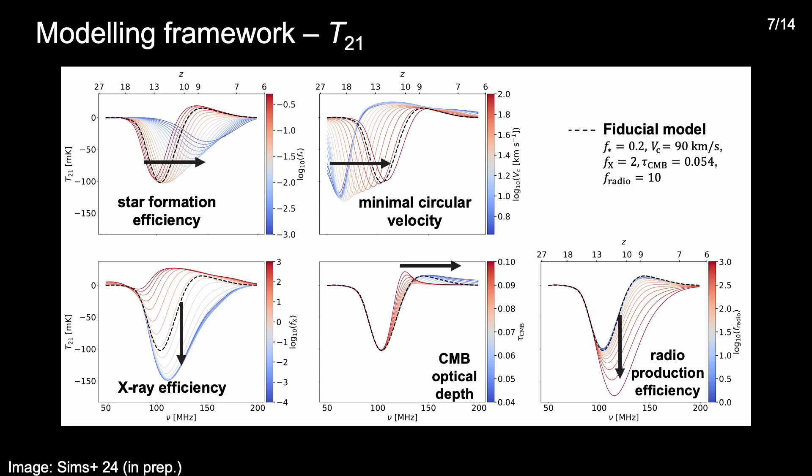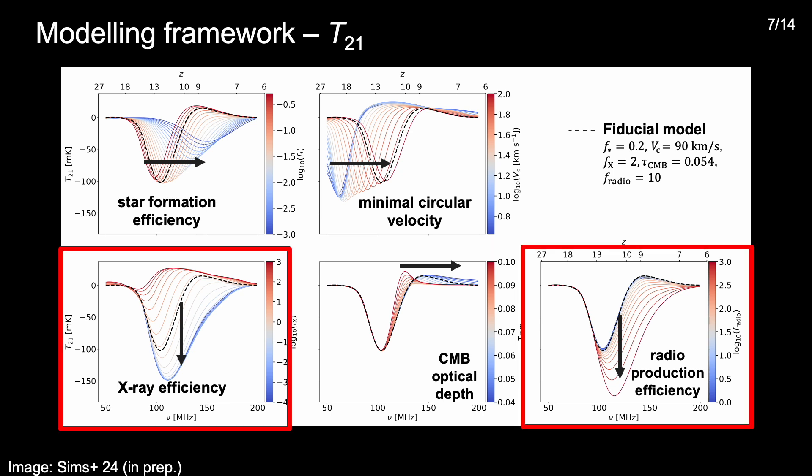In contrast, changes in the galactic X-ray or radio efficiency scale the amplitude of the signal, with low X-ray efficiencies translating to low levels of heating of the IGM and a low 21cm spin temperature, and high radio production efficiencies translating to a high radio background temperature, and the combination of the two resulting in the greatest contrast and producing the largest 21cm signals in absorption. So a global 21cm signal upper limit will tend to constrain the posterior distribution of the X-ray and radio production efficiency, and a detection will constrain all five of these astrophysical parameters.